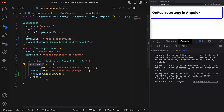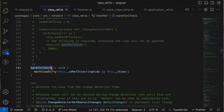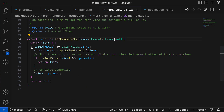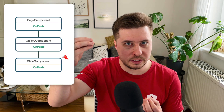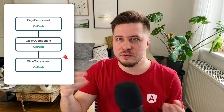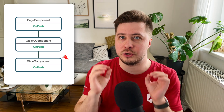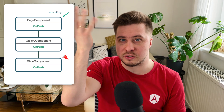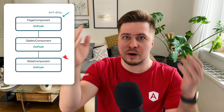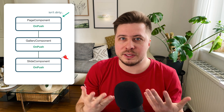markForCheck has another important behavior: if you look at its source code, not only the current component is marked as dirty, but all its ancestors as well. This is needed because a parent component might also have OnPush strategy enabled. If the parent isn't marked dirty, Angular won't reach the child to check it — it would see the parent isn't dirty and skip its children entirely.